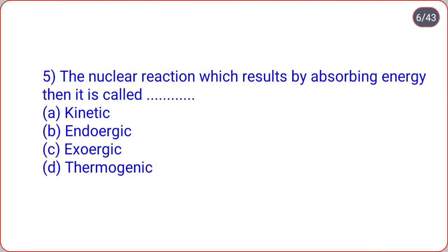The next: the nuclear reaction which results by absorbing energy, then it is called dot-dot. Options are kinetic, endoergic, exoergic, thermogenic. The nuclear reaction which results by absorbing energy is called endoergic, option B.